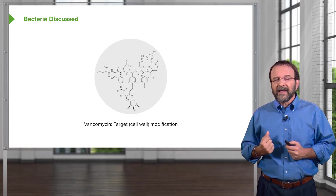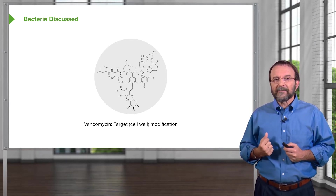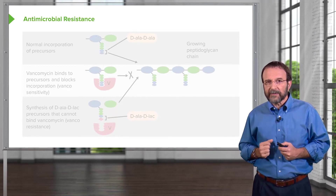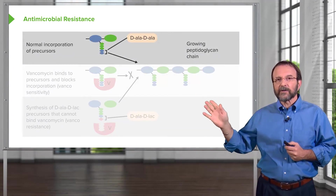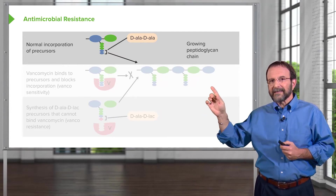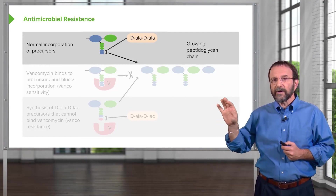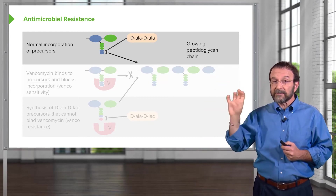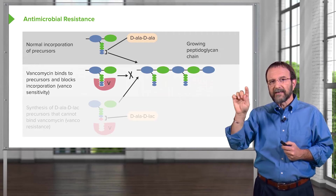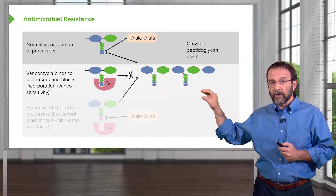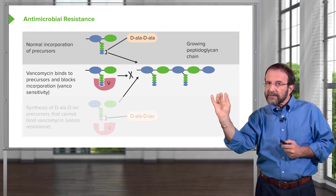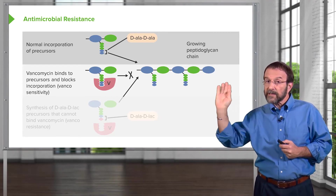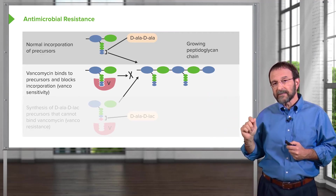Let's take vancomycin as an example. Vancomycin acts by blocking the assembly of the murein cell wall. At the top of this slide is the normal incorporation of murein precursors — the blue and green ovals are sugar molecules that are part of the growing peptidoglycan chain, and the smaller ovals below are amino acids that will cross-link the murein to make it very strong. Vancomycin binds to these amino acid precursors, blocking their incorporation into the new chain, thereby inhibiting murein synthesis and killing the bacteria.